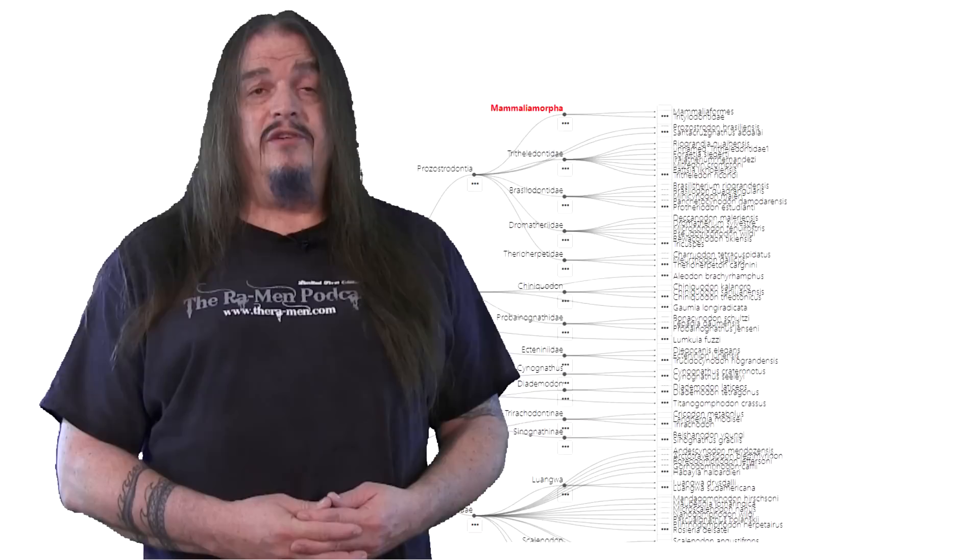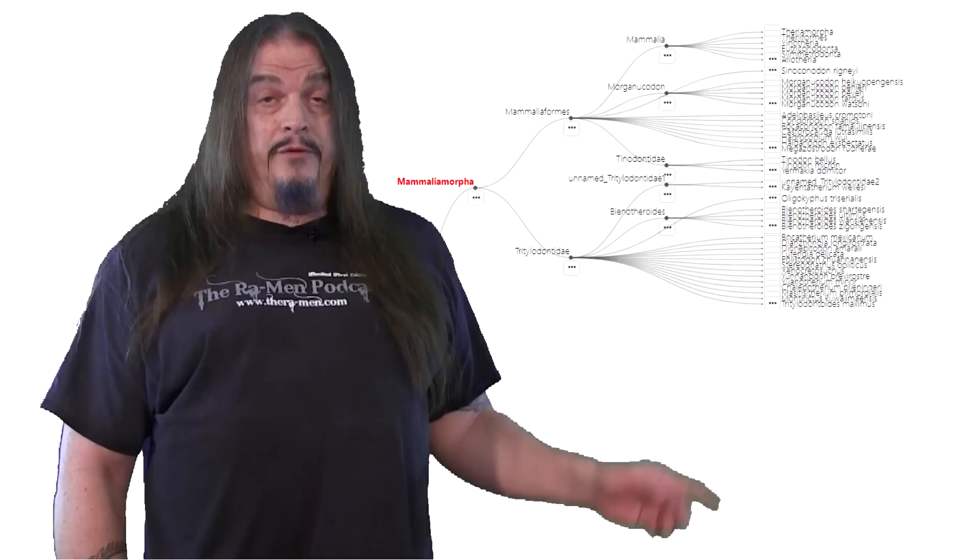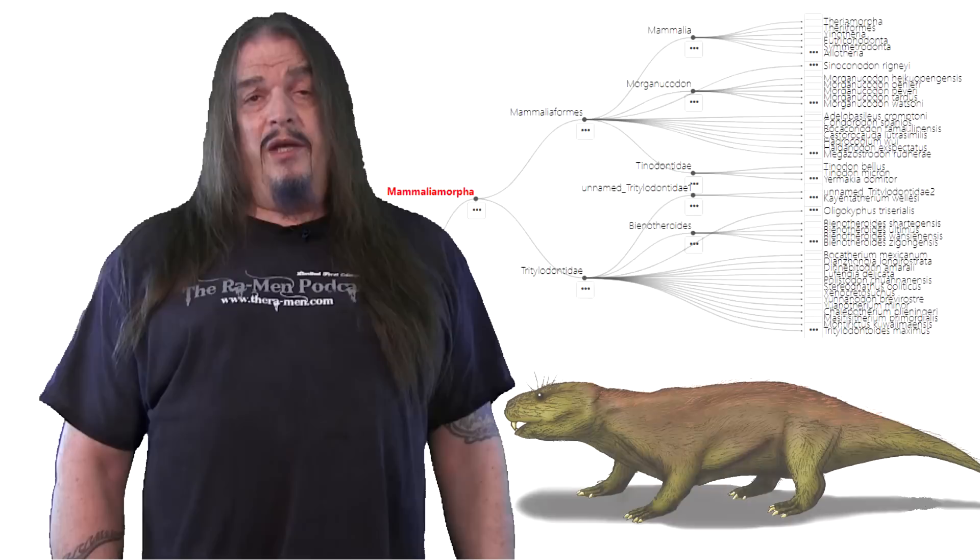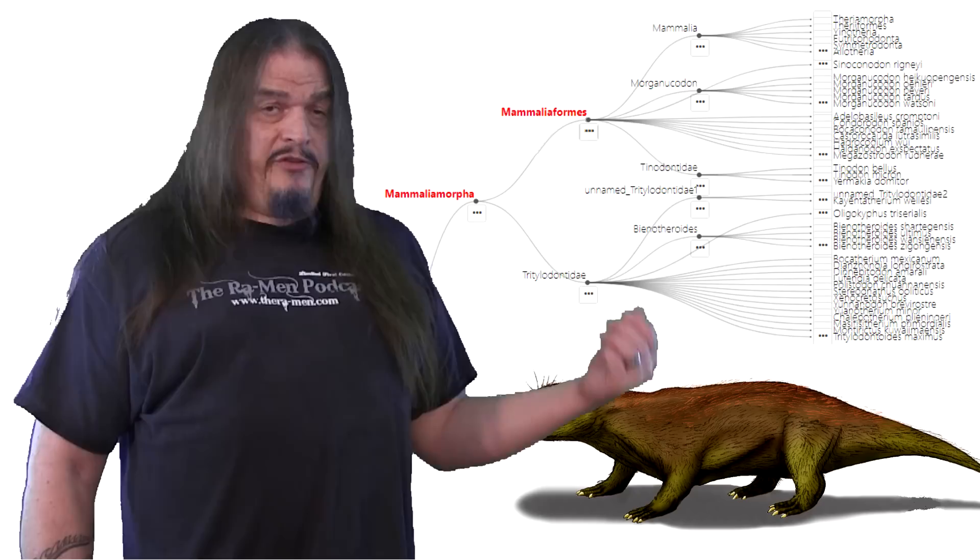And here we are at Mammalia Morpha. You're probably excited because you think we're 23 episodes into this series and we finally come to mammals, but not quite yet. Although these are the shape of things to come. The meaning of both Mammalia Morpha and Mammalia Forms refers to the shape of mammals, or what are shaping up to be mammals.